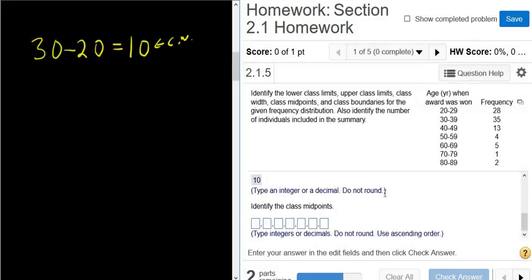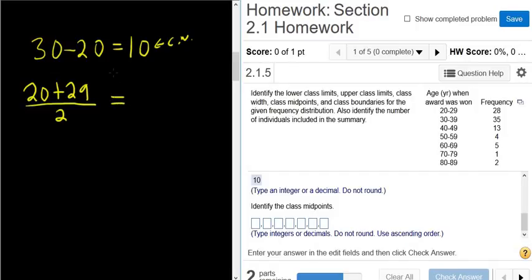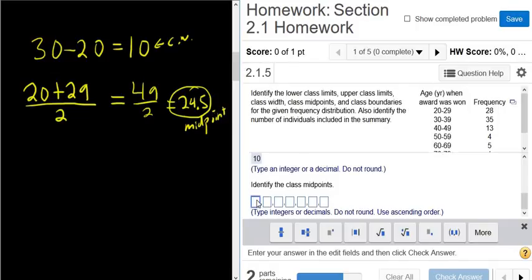Identify the class midpoints. Okay, so to find the midpoint for the first class, what we do is we add the lower class limit, so 20, to the upper class limit, so 29, and we divide by 2. Okay, that's going to give us, let's see, 20 plus 29 is 49 over 2. And you can do this in your head or you can use the calculator. This is 24.5. So that is the midpoint for the first class. Okay, this is the midpoint for the very first class. So that's going to go here, 24.5.